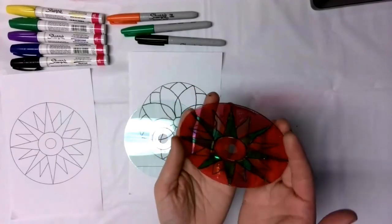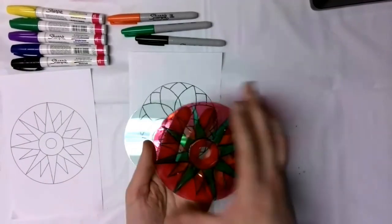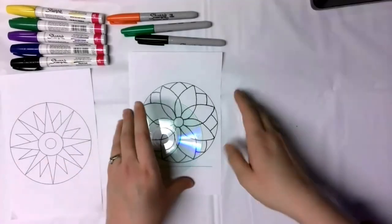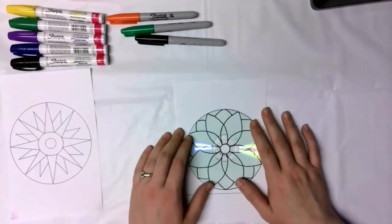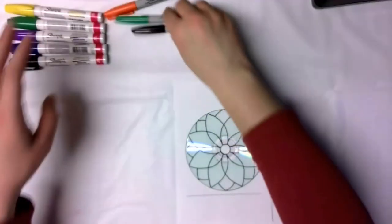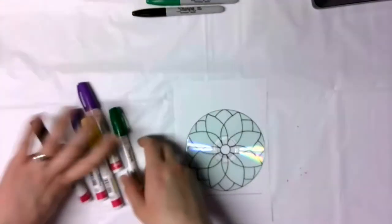There we go. That is our first CD Suncatcher. So I'm going to set that aside and we will work on our second one. And with this one we are going to be using now our paint markers.